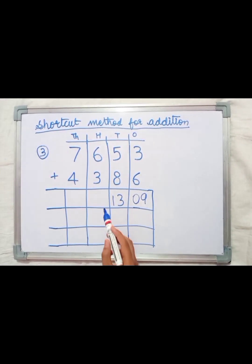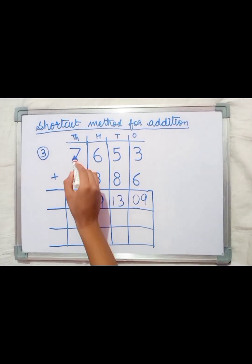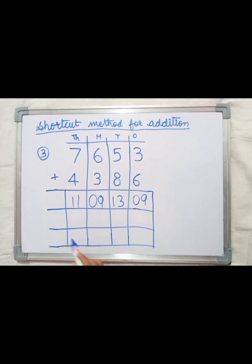6 plus 3 equals 9, write it as 09. 7 plus 4 equals 11. Let's add these.